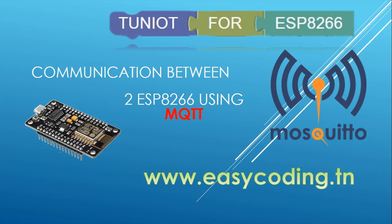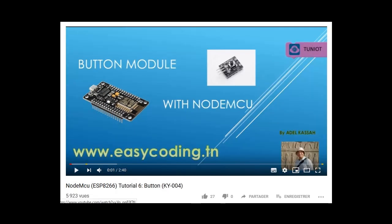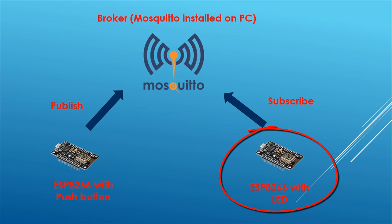In this video, we will see how to make a communication between two ESP8266 boards using the MQTT protocol. I assume that you already saw the video about the basic MQTT operations. In this video, we will control an LED with a push button. The board with the push button will publish on the broker — it will send the data. The second board will be subscribed to the topic and will receive the data.